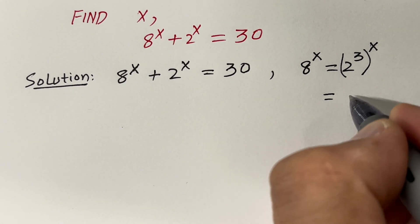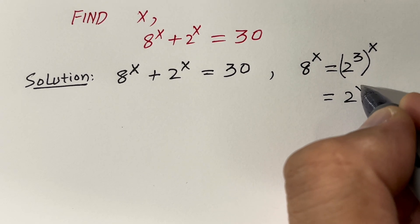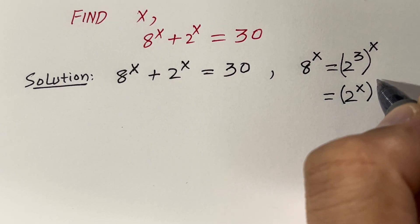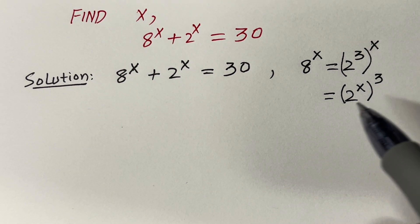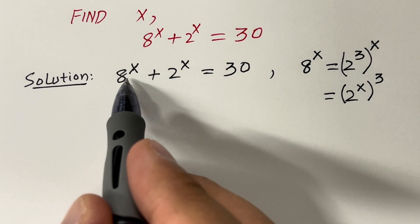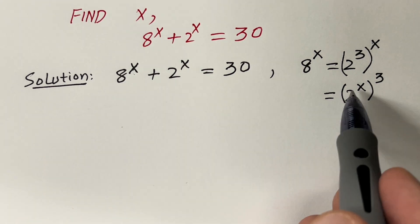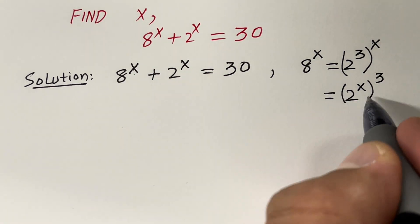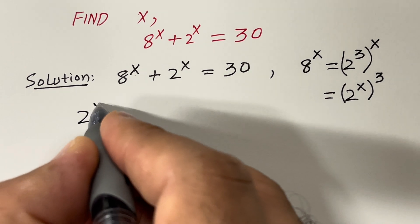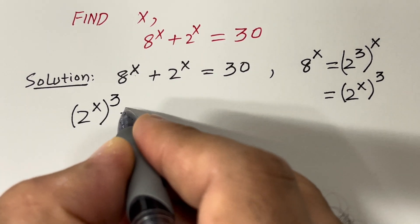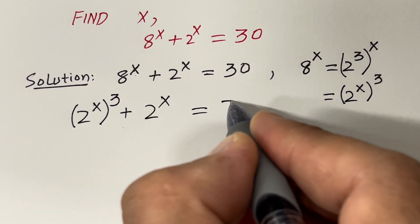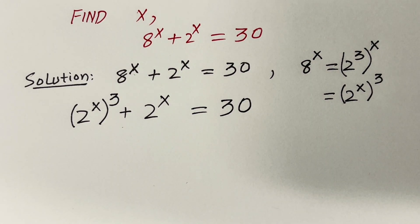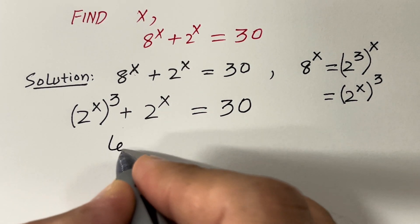This can be written as 2 raised to the power x, raised to the power 3 — you can switch these powers to get this form. So let's replace 8 raised to the power x by 2 raised to the power x, raised to the power 3, and write the remaining term as it is.